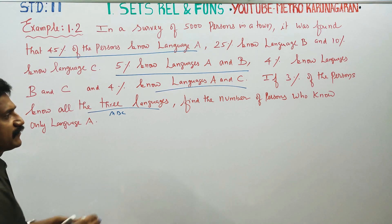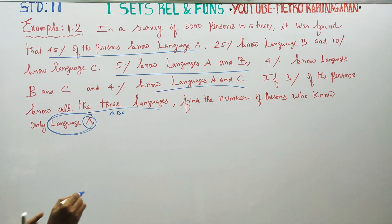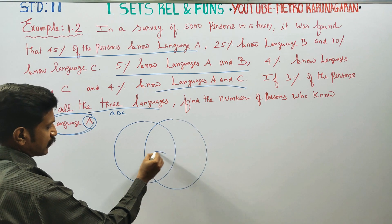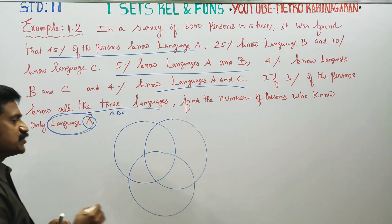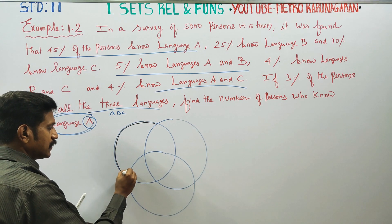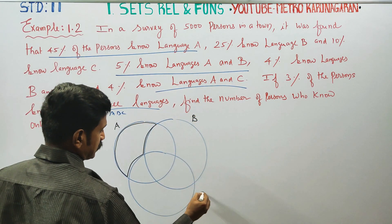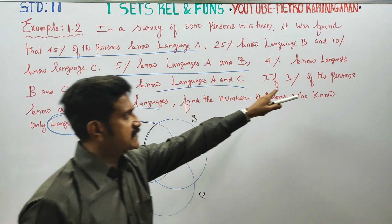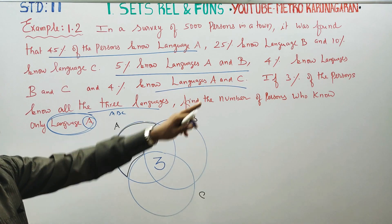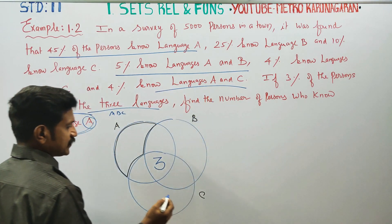find the number of persons who know language A. To solve this, we use set theory. If 3% of the people know all 3 languages A, B, and C, we start by computing the intersections. For A and C: 4 minus 3 equals 1.